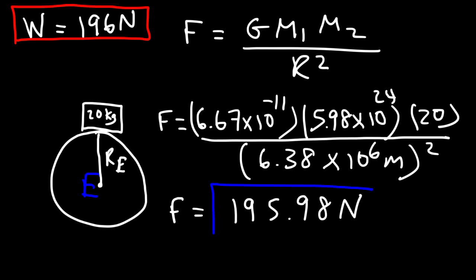So as you can see, the gravitational force, or the weight force, is about 196 newtons. Now of course, these numbers that I'm using are rounded figures. So that's why it's not exactly the same, but it should be the same. So this is approximately 196 newtons. So the weight force and gravity, or the gravitational force, they're identical.